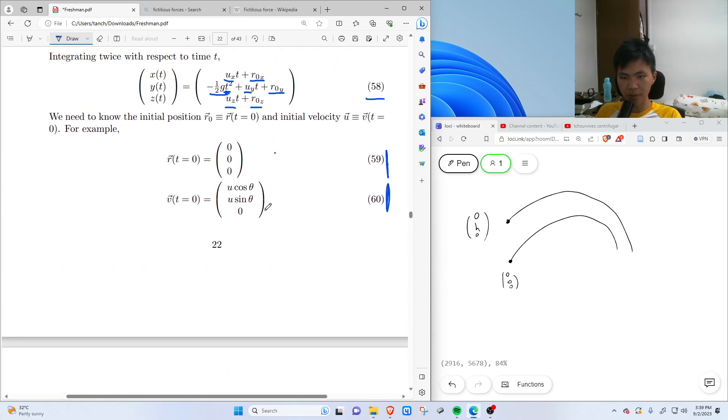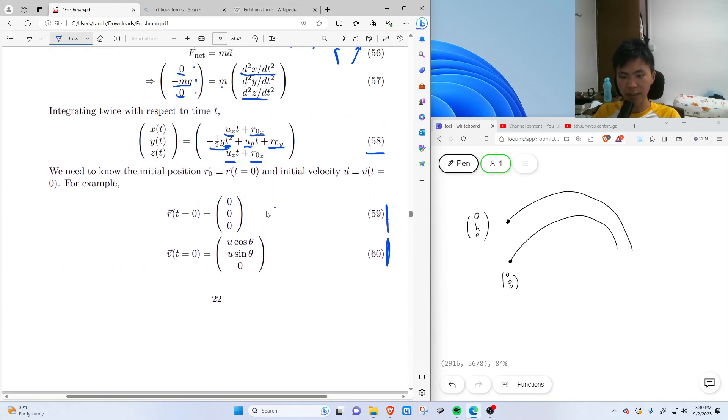So usually we also rewrite velocity, instead of using UX and UY, usually we write it as U cosine theta and U sine theta, where theta represents the angle that we throw the ball at. And the reason why we want to do this is because later on, we can maximize the range by varying the angle. And on top of that...